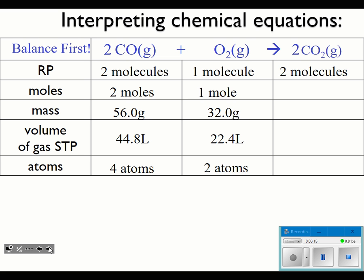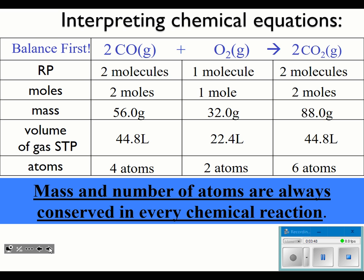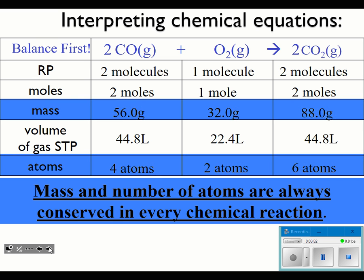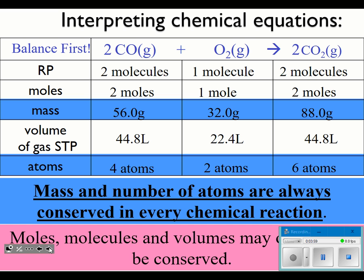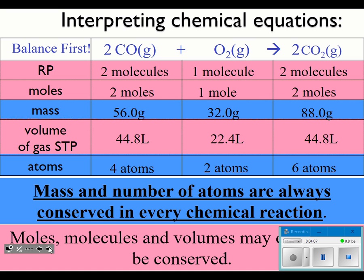For the CO₂, we have two molecules because the coefficient in front is a two, and two moles. For mass, we look up carbon and oxygen times two, then multiply all of it times two — that gives 88 grams, meaning the GFM is 44 grams by itself. Then 22.4 multiplied by two gives 44.8 liters, and there are six atoms because there are three atoms in carbon dioxide times two. Something to realize: the mass number and the number of atoms are always conserved, but the moles, volume, and molecules may not always be conserved.